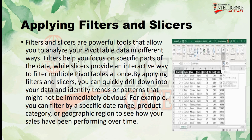Filters and slicers are powerful tools that allow you to analyze your pivot table data in different ways. Filters help you focus on specific parts of the data, while slicers provide an interactive way to filter multiple pivot tables at once. By applying filters and slicers, you can quickly drill down into your data and identify trends or patterns that might not be immediately obvious. For example, you can filter by a specific date range.